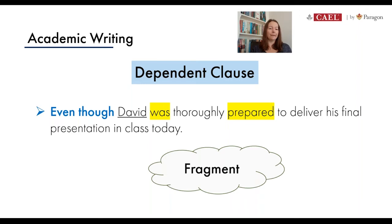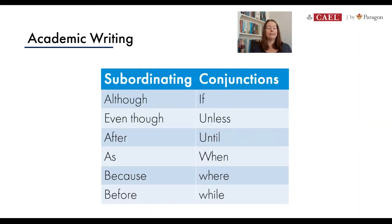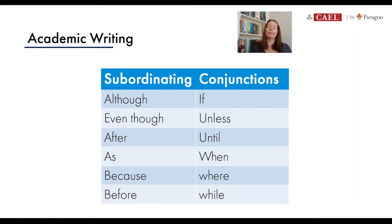Those blue words at the beginning of the clause — 'even though' — are also conjunctions, also connecting words, but they belong to a different group than the FANBOYS. The FANBOYS create compound sentences and are called coordinating conjunctions. But 'even though' and the rest of the words on this list are called subordinating conjunctions — they still join ideas together but are used in a slightly different way. There are probably 50 or more subordinating conjunctions in English; the 12 shown here are the most commonly used ones in writing and speaking.